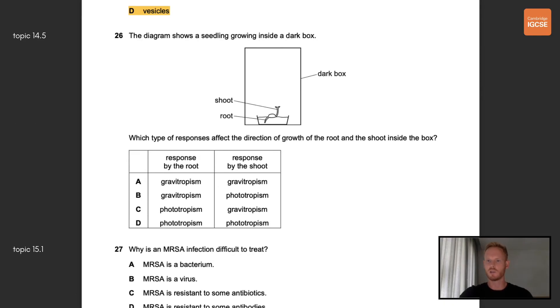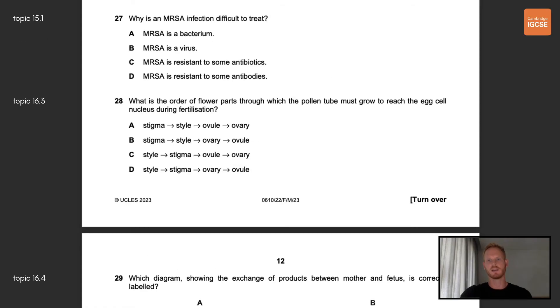Number 26, the diagram shows a seedling growing inside a dark box. Which type of responses affect the direction of growth of the root and shoot inside the box? Because the seedling is growing inside a dark box, the growth responses of the root and shoot can't have anything to do with light. The response in both cases is therefore gravitropism. So the correct answer is A. Number 27, why is an MRSA infection difficult to treat? MRSA is a strain of bacteria that, through natural selection, has become resistant to certain antibiotics. The correct answer is therefore C.